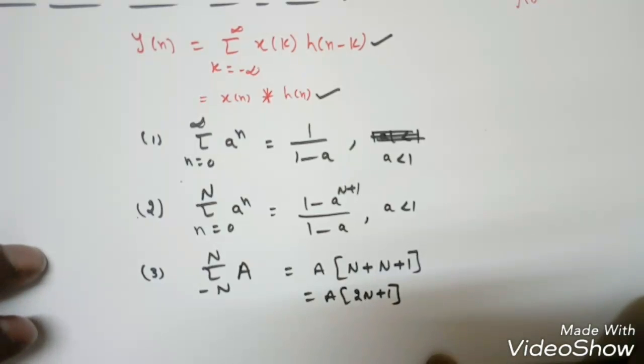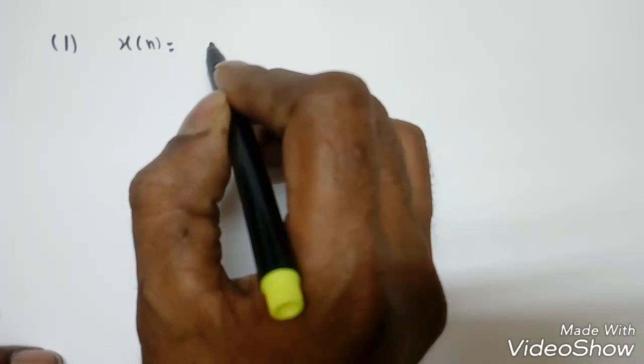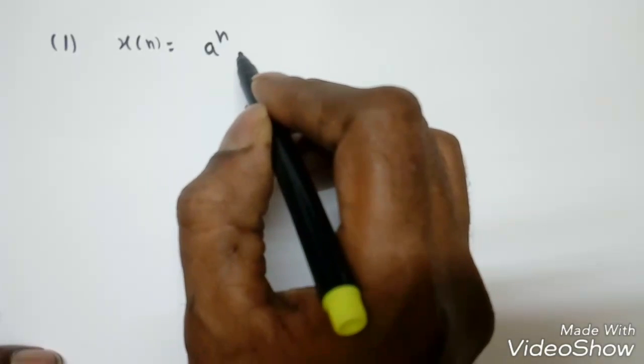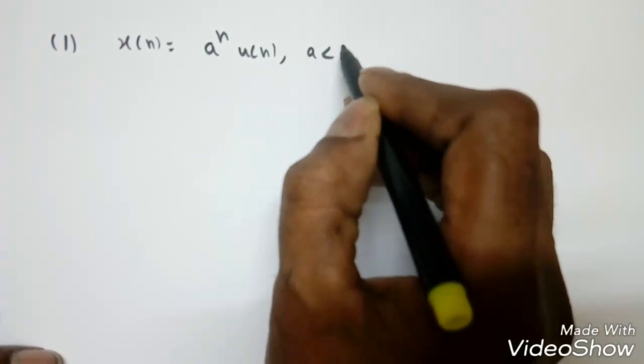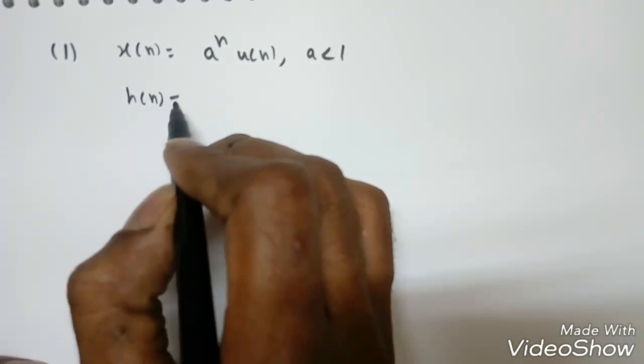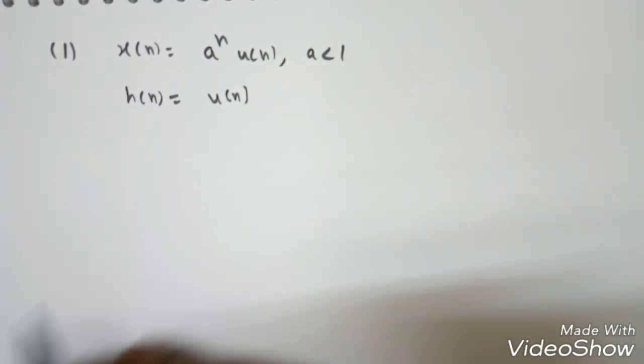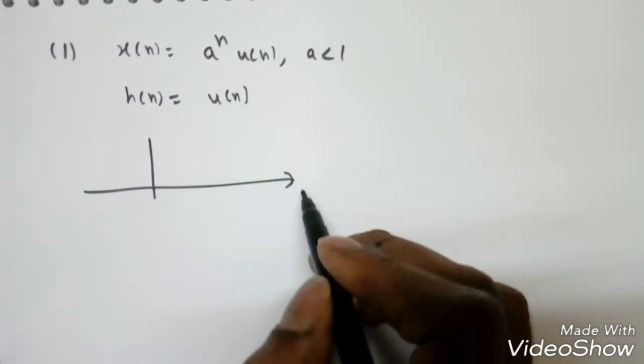For the convolution example, we take x(n) = a^n·u(n) with a < 1, and h(n) = u(n). We proceed the same way as for continuous-time signals.